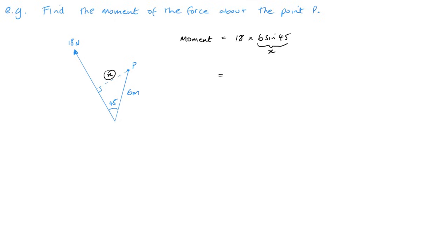And then I put it into my calculator and I get 54 root 2 or to three significant figures, that's 76.4 Newton meters to three significant figures. And then the direction we're going to go around this way, so we're going clockwise. I must always write that direction. That is the full moment of the 18 Newton force.